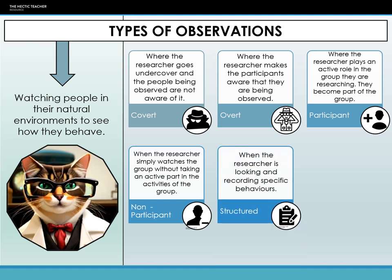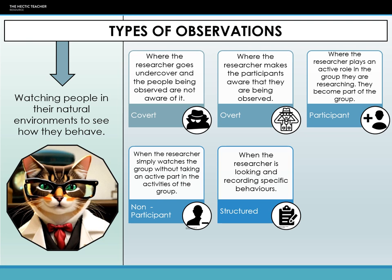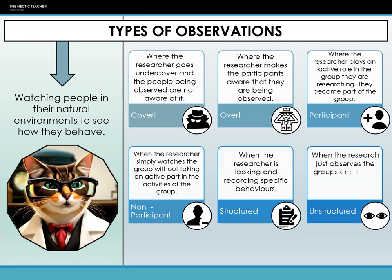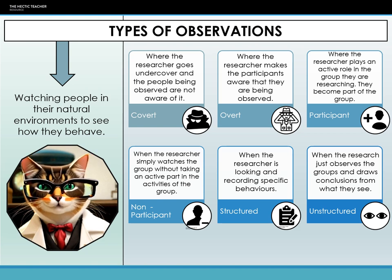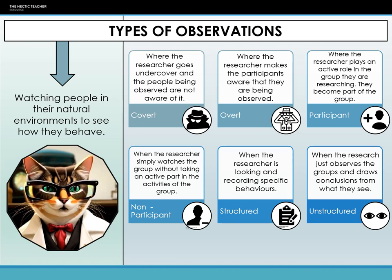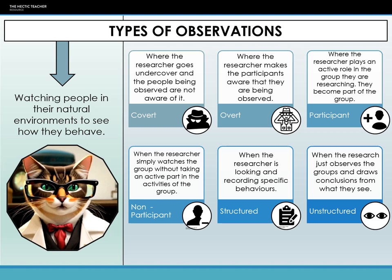Structured observation is more methodical and preferred by positivists — think of it as having a checklist while you're observing. It brings uniformity to the table, making data comparison easier, but it might lack depth since it's focused on specific behaviors. Lastly, unstructured observation is like freestyle dancing — no fixed steps, just going with the flow. Researchers simply dive in and note whatever stands out, which is why it is preferred by interpretivists. It's flexible and can lead to unexpected discoveries, but making sense of such vast and varied data can be challenging. Remember, each method has its place, and it's all about choosing the right approach for the research question at hand.